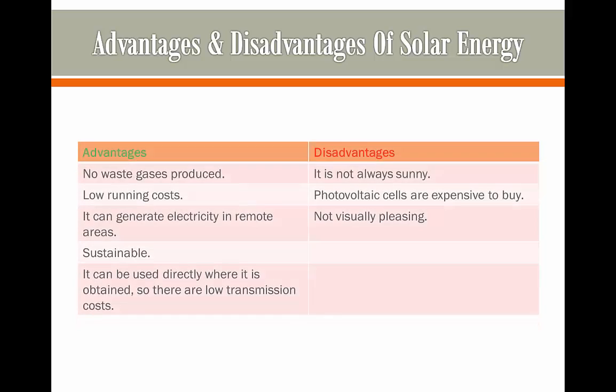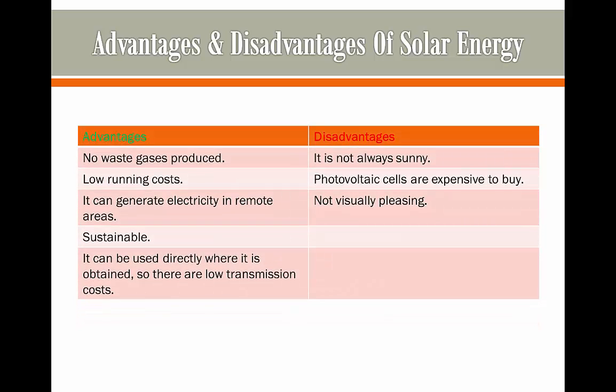Now let's look at the advantages and disadvantages of solar energy. Pros include the fact that no waste is produced, there are very low running costs, and it can generate electricity in remote areas. For example, a solar panel set up in a village far away from a big city is going to be able to produce electricity on its own for that house.